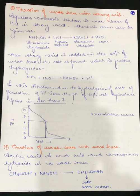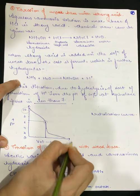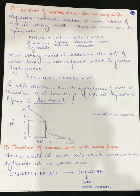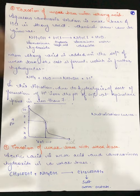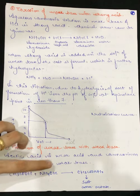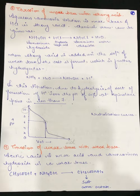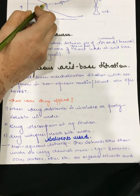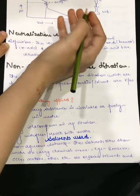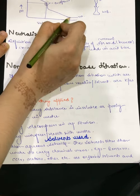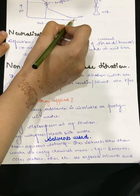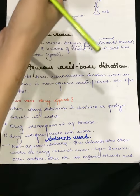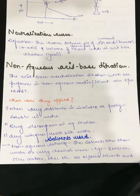Now we have titration of weak base with weak acid. Here we use acetic acid as the weak acid and ammonium hydroxide as the weak base. The reaction of acetic acid with ammonium hydroxide gives ammonium acetate as the salt. Similar to the previous reaction, the curve starts from the base side, reaches an equivalence point which is our neutralization point, and since a weak acid is involved, the curve remains above the origin.